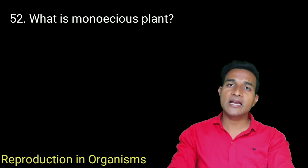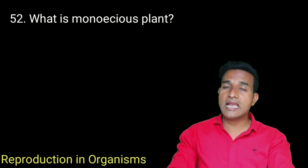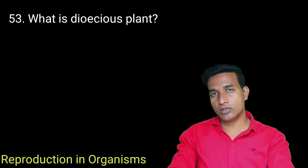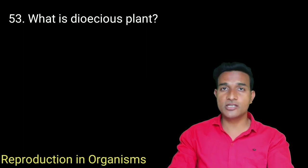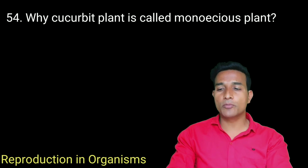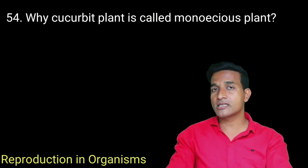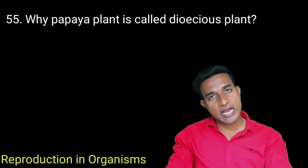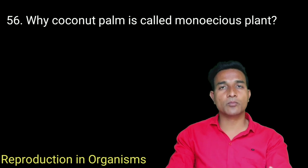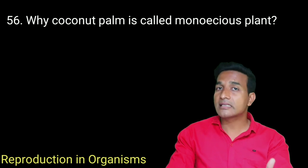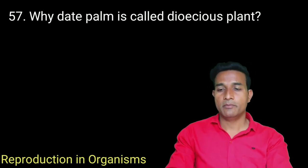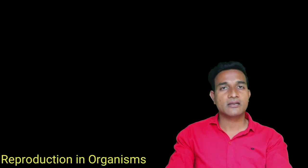What are homothalic organisms? If both male and female reproductive structures are present in the same organism, it is called homothalic — used in fungi. What are heterothalic organisms? If the male and female reproductive structures are present on different organisms, it is called heterothalic. What is a monoecious plant? If male and female flowers are found on the same individual, it is called a monoecious plant. What is a dioecious plant? If the male and female flowers are present on separate individuals, it is called a dioecious plant — example: papaya and date palm. Cucurbits are monoecious; papaya and coconut palm — coconut is monoecious and date palm is dioecious.